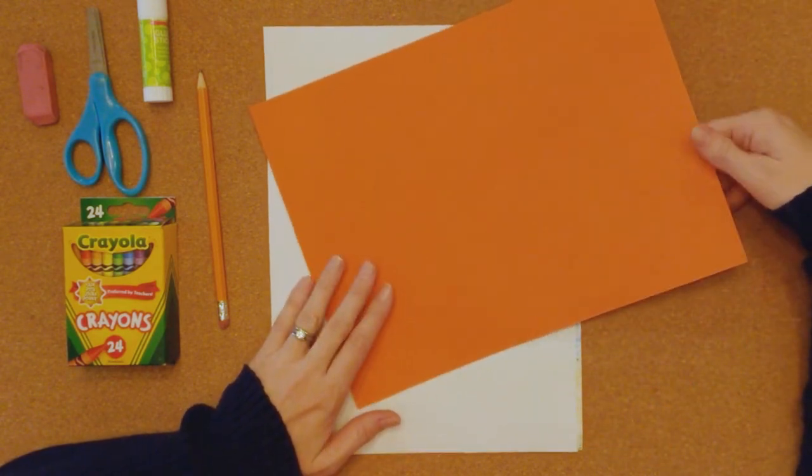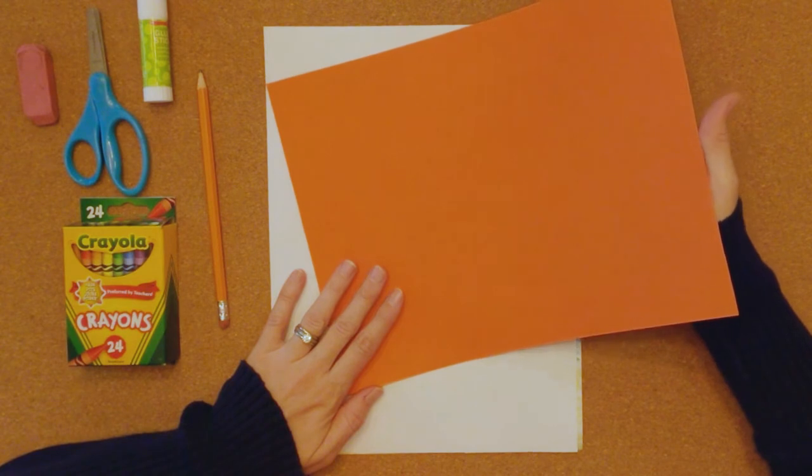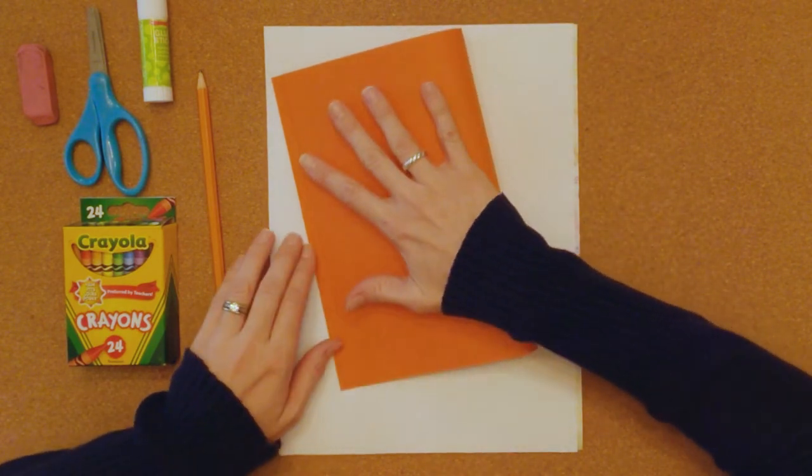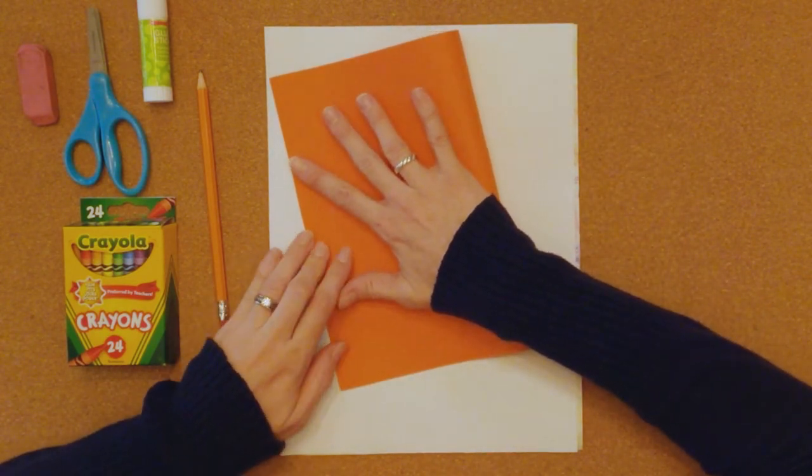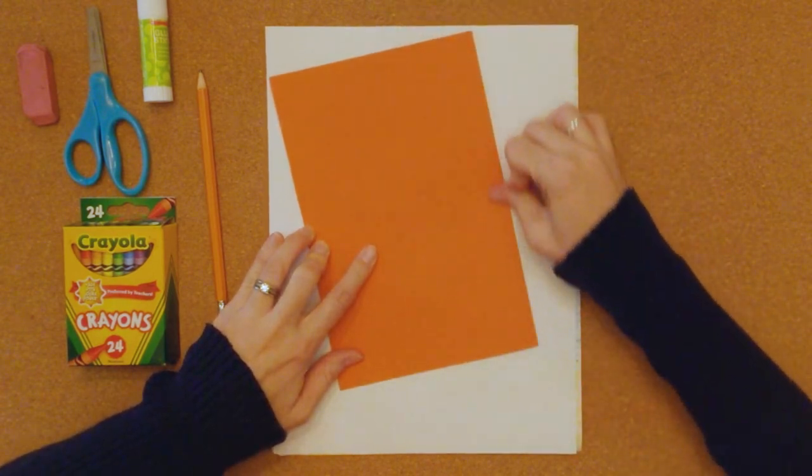First thing I want to do, I like to conserve paper and we're going to probably do a project here in a couple weeks where we need all of our papers. So we're going to only use half of this orange sheet of paper today. So go ahead and fold your orange sheet of paper in half and crease it.